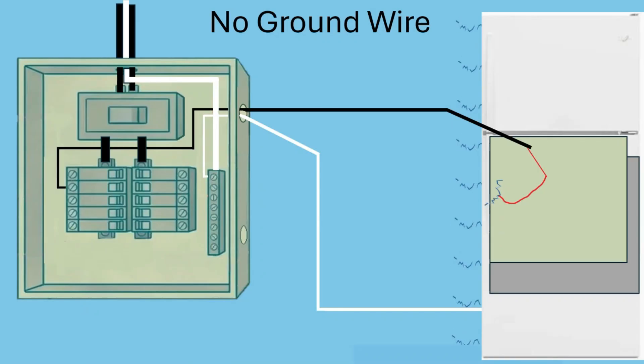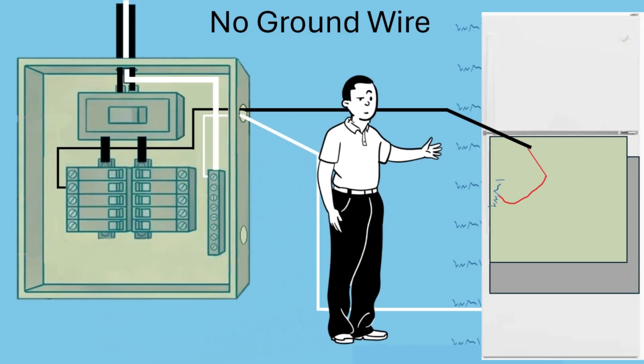Before I get too far into it let me explain what the purpose of grounding is. Let's suppose you have a washing machine and there's a problem with it. A wire comes loose on the inside and it's touching the frame of the washing machine.